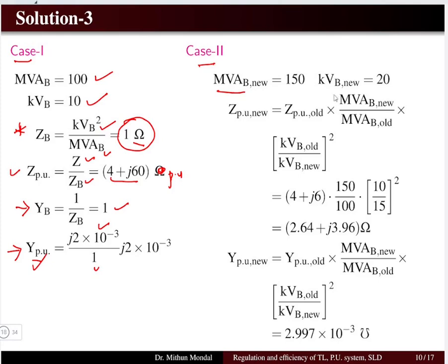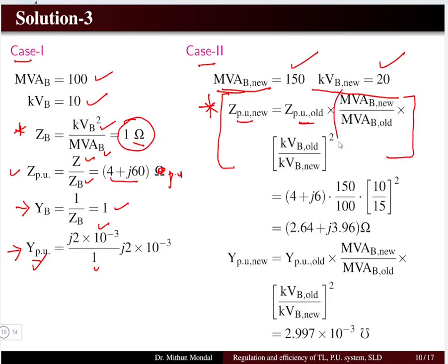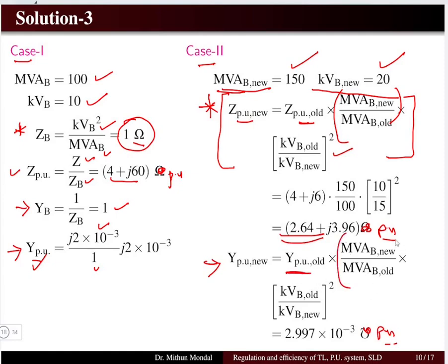Under case 2, the base is now 150 MVA and 20 kV. To convert from old to new per unit values, we use the formula: Z_pu_new = Z_pu_old × (MVA_base_new / MVA_base_old) × (KV_base_old² / KV_base_new²). Substituting the known values gives the new per unit impedance. Similarly, the per unit admittance is computed, yielding 2.997 × 10⁻³ per unit for the new base conditions.